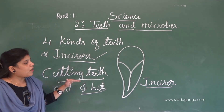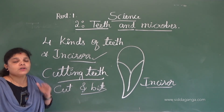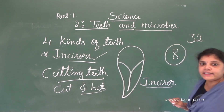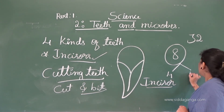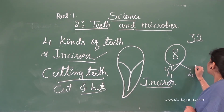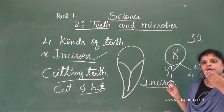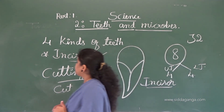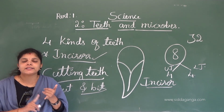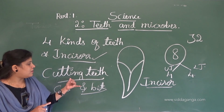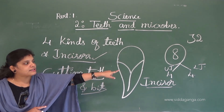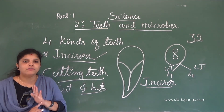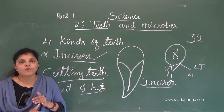How many incisors are there in your mouth? There are a total of eight incisors — four in the upper jaw and four in the lower jaw. Total eight incisors in our mouth.